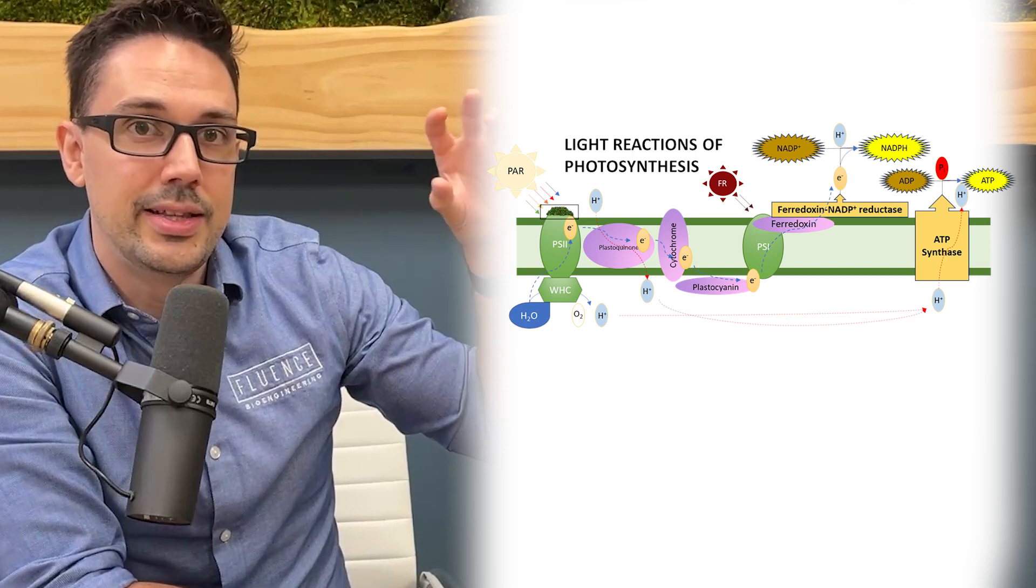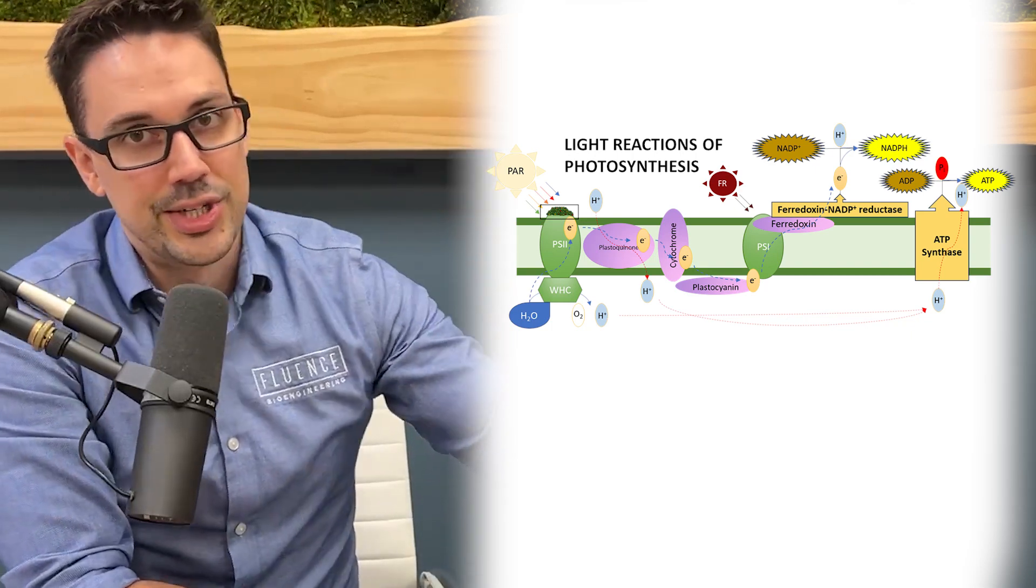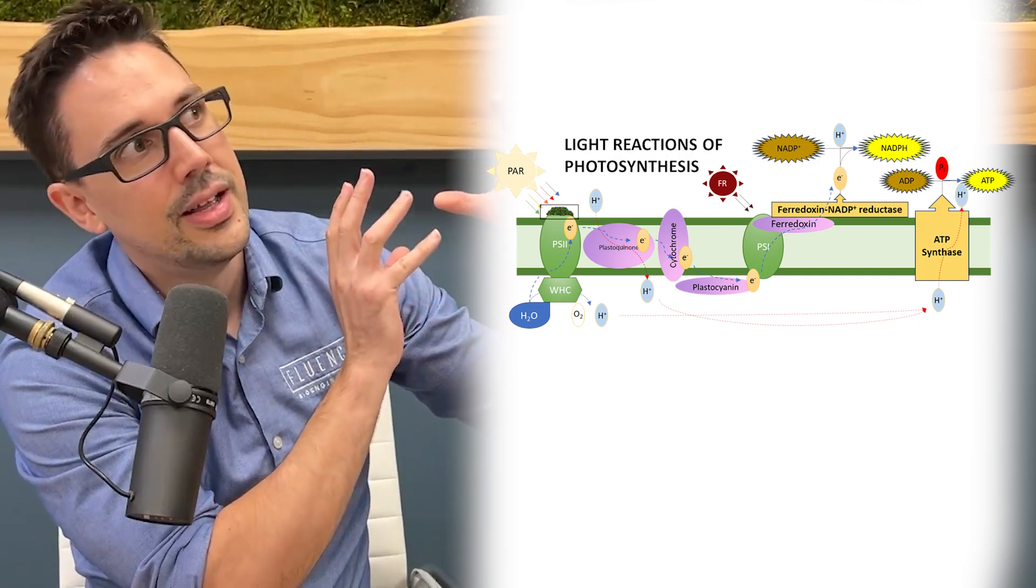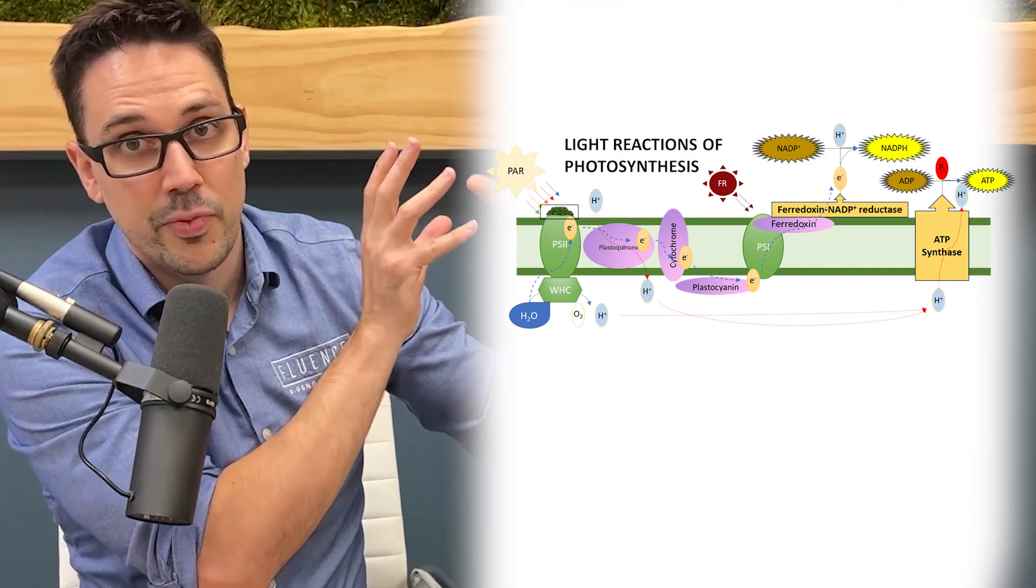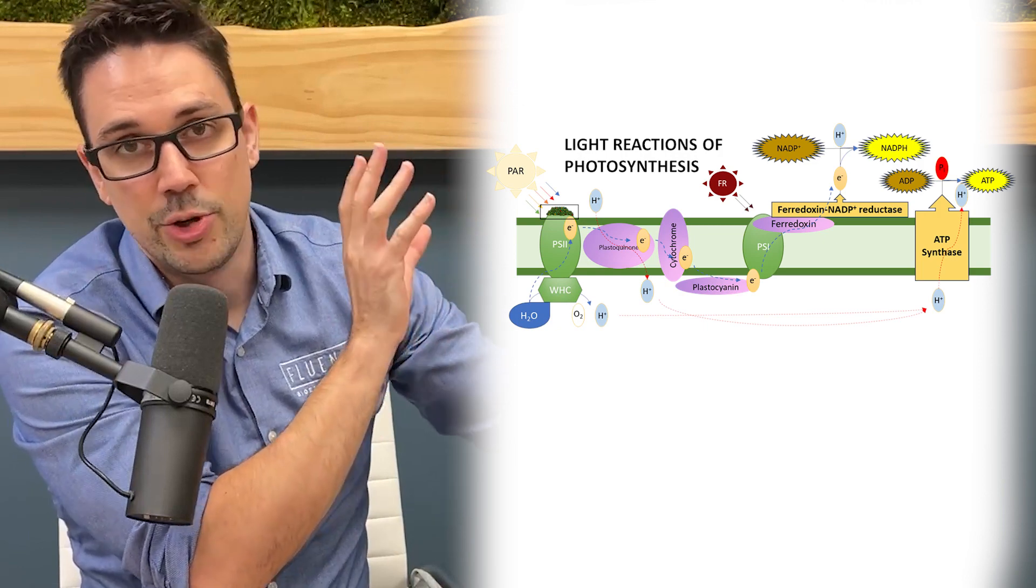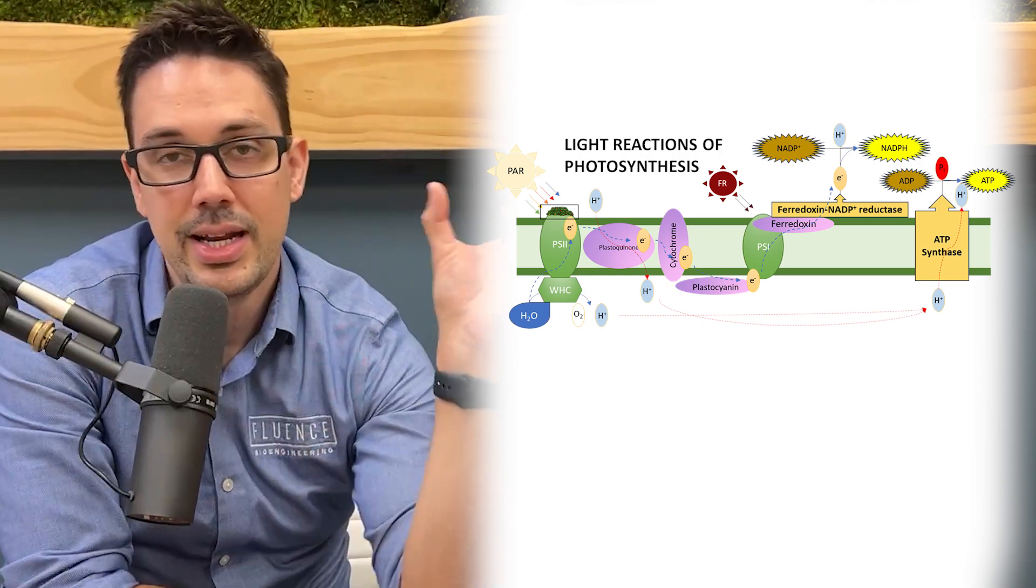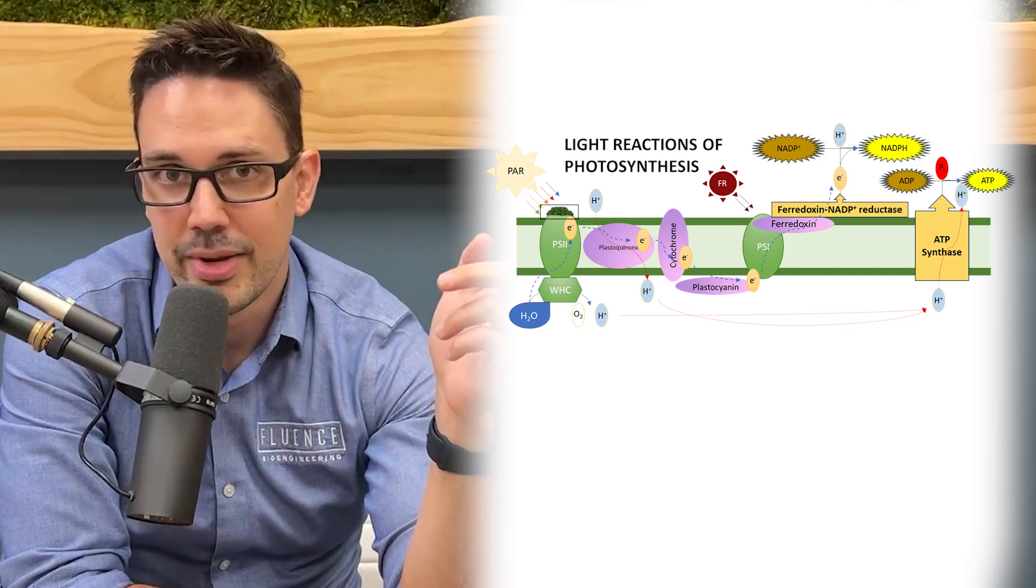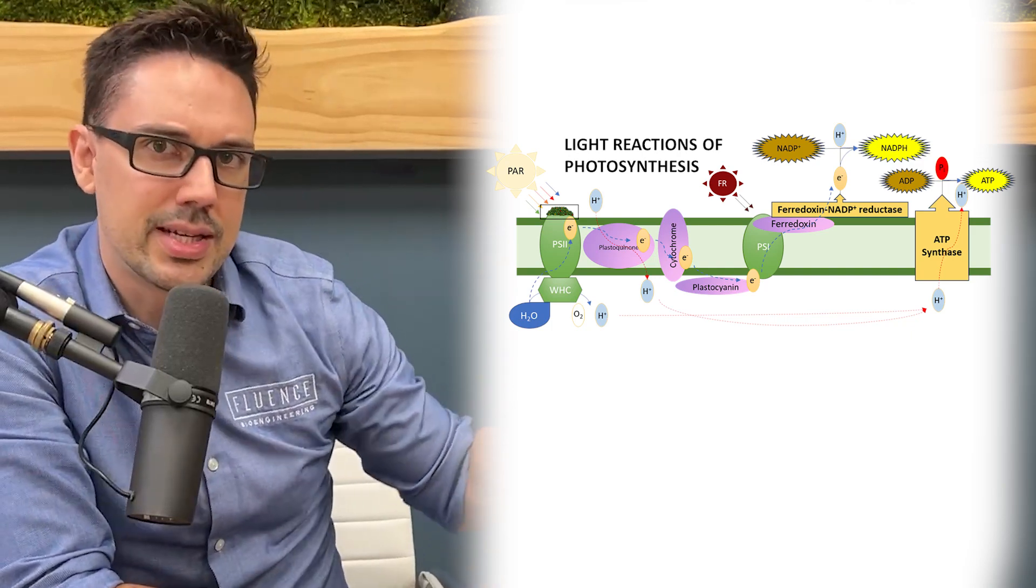That electron is consumed in that enzyme by converting NADP with a hydrogen to create NADPH. NADPH is ultimately the final product that you care about, alongside ATP.